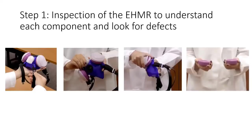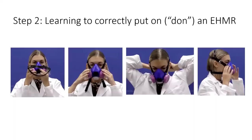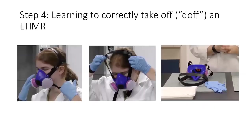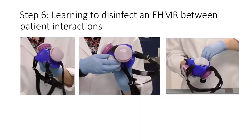For the training, workers watched a nine-minute video in which they were trained in these six key areas, including inspection of the elastomeric to understand each component and how to look for defects within the respirator. They also learned how to correctly don and doff the elastomeric, how to perform user seal checks including positive and negative pressure checks, and how to disinfect the elastomeric between patient interactions.